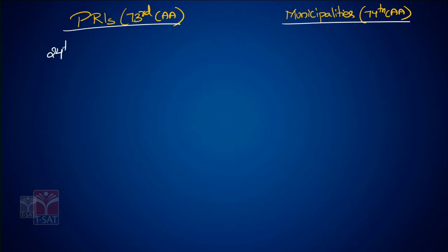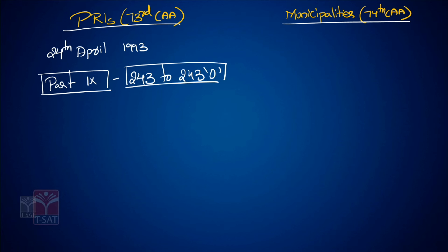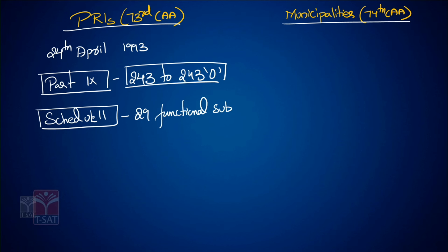The 73rd Amendment Act came into force on 24th April 1993. It added Part 9 of the constitution, discussed from Article 243 to Article 243O. The 73rd Constitutional Amendment Act also added Schedule 11 of the constitution, which consists of 29 functional subjects to be performed by Panchayati Raj Institutions.